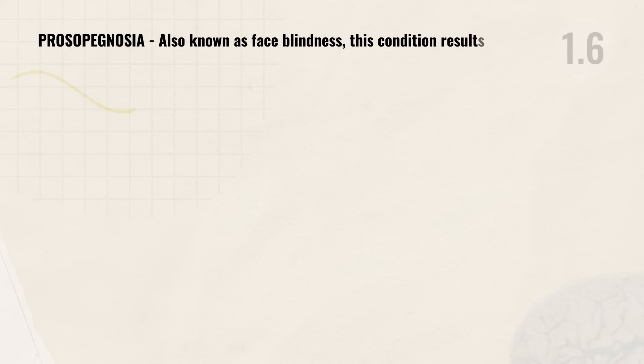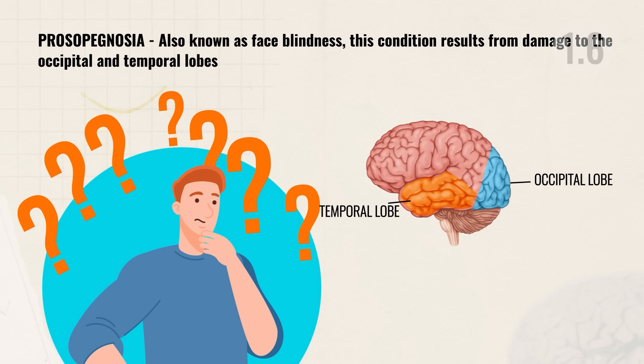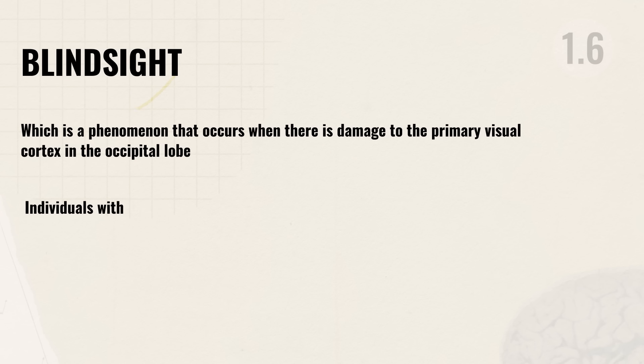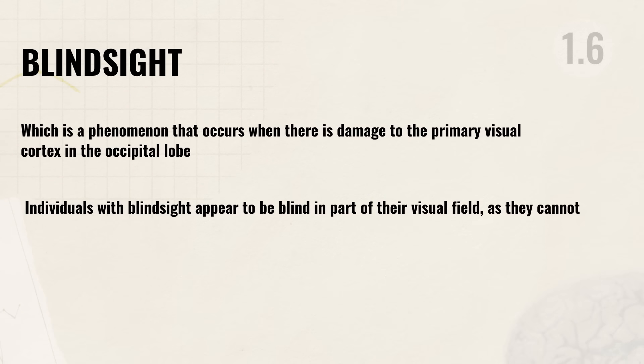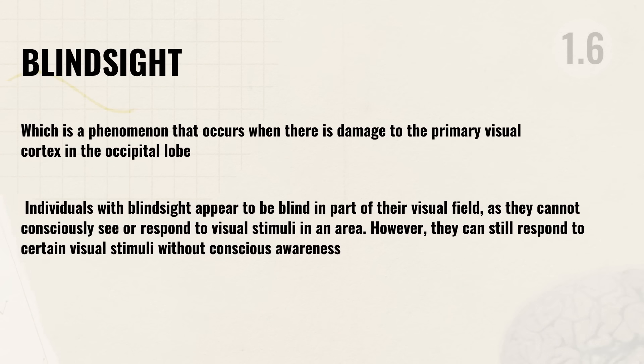Two notable disorders from damage to the brain, primarily the occipital lobe: prosopagnosia, also known as face blindness, results from damage to the occipital and temporal lobes. Individuals lose the ability to recognize faces even of close friends and family — they can still see and describe facial features but cannot identify whose face they're looking at. Blindsight occurs when there is damage to the primary visual cortex — individuals appear blind in part of their visual field and cannot consciously see or respond to visual stimuli in that area, yet can still respond to certain visual stimuli without conscious awareness, such as navigating around obstacles.